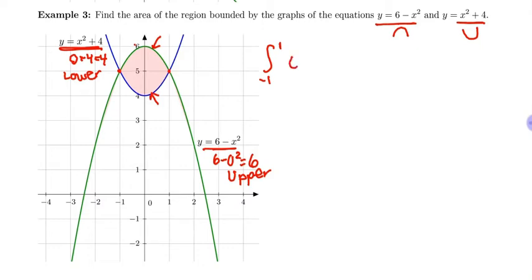So we're going to use the 6 minus x squared as our upper curve minus our lower curve is x squared plus 4 on this interval. And then we need a dx in here.